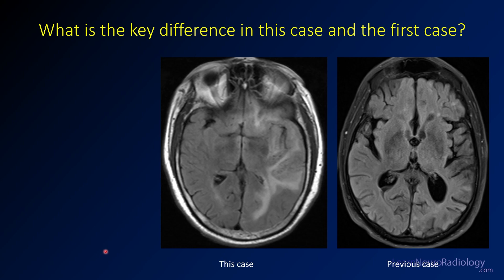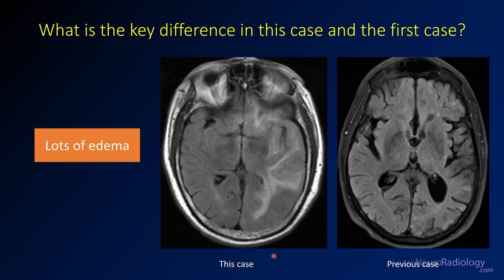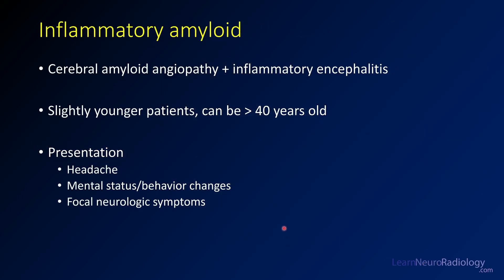The key difference in this case compared to the previous one is really all of that edema. Otherwise, they appear somewhat similar. This is a case of inflammatory amyloidosis, which is almost an extra manifestation on top of cerebral amyloid angiopathy — essentially an inflammatory encephalitis. You'll often see some of those underlying features of amyloid angiopathy, such as peripheral hemorrhages, microhemorrhages, or sequela of old blood products. Inflammatory amyloid tends to affect slightly younger patients, more in the 40 to 70 age group. The overall cerebral burden of microhemorrhages tends to be a little bit less. These patients often present with headache, mental status changes, and focal neurologic symptoms, as was the case here.